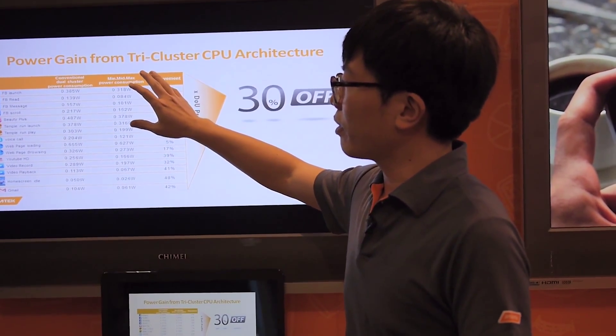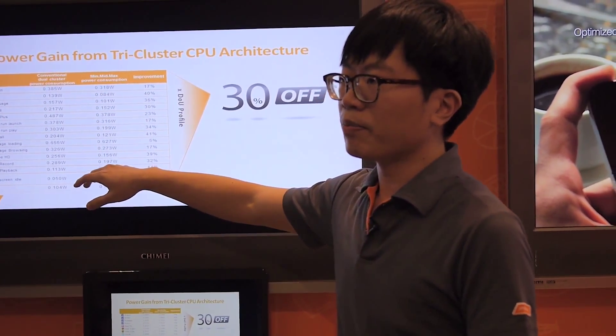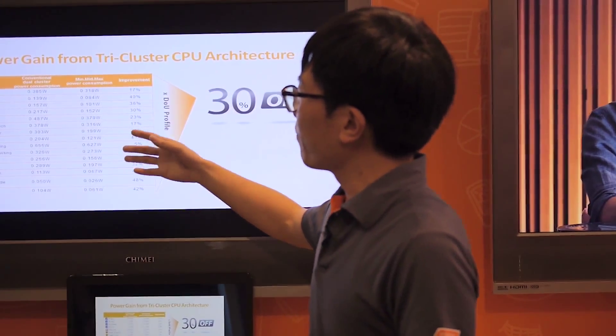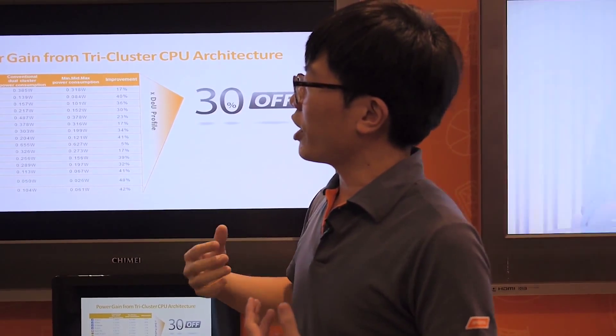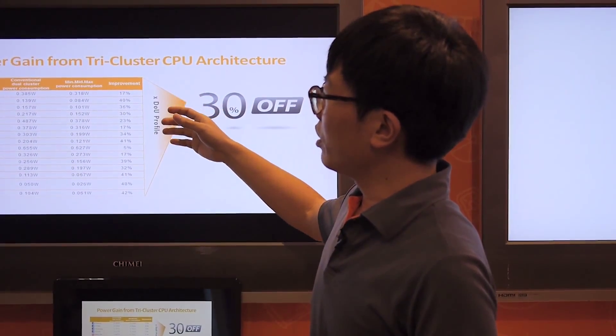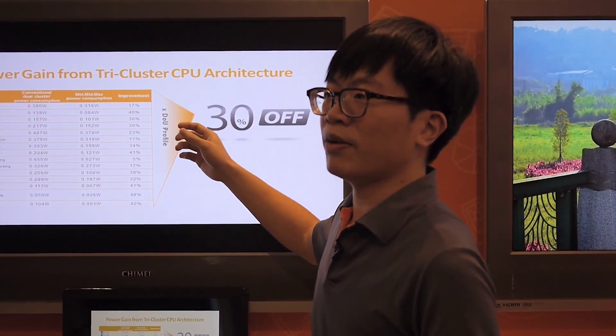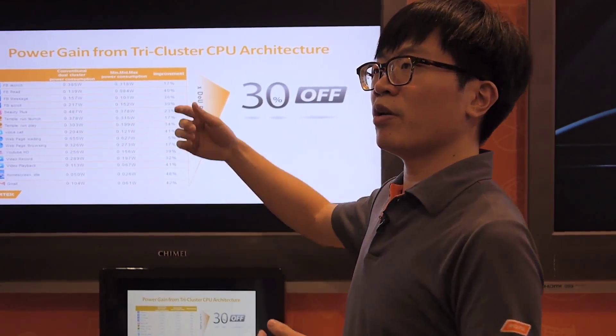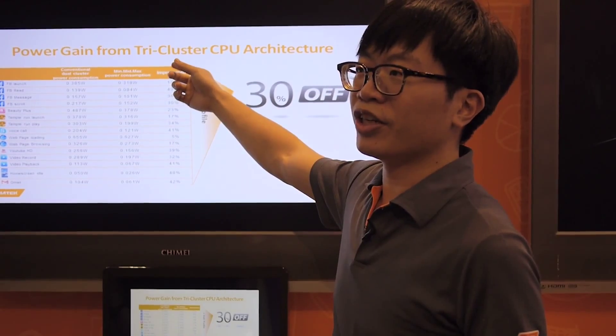Here is the comparison between the dual-cluster and the tri-cluster. With our tri-cluster technology, we can reduce power consumption by up to 30%. This is a whole new technology, developed through tight cooperation with ARM. This tri-cluster is based on ARM's big.LITTLE architecture, which we modified to provide this new technology.